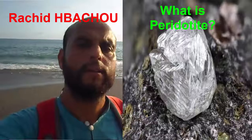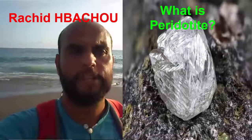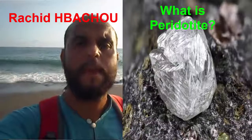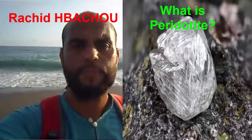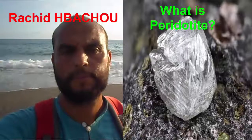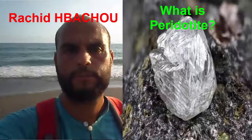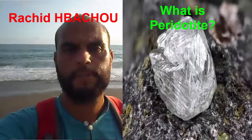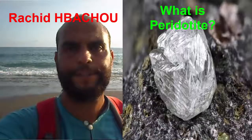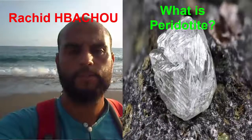Peridotites are economically important rocks because they often contain chromite, the only source of chromium. They can also be rocks of volcanic origin and they have the potential to be used as a material for sequestering carbon dioxide.